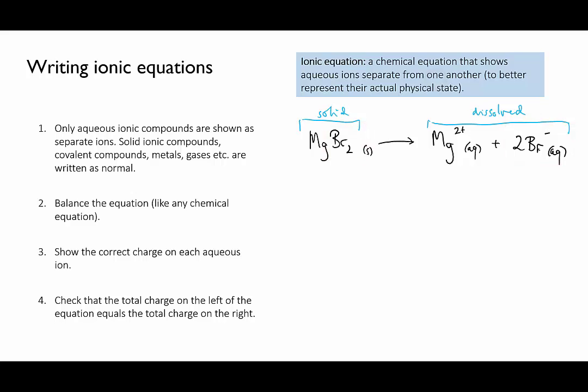Notice that the stoichiometric coefficient of the bromide ions on the right-hand side is a big two representing two separate bromide ions. On the left-hand side in the formula there's a small two that comes after the bromide because we're representing that there are that many bromides within the formula rather than separate it out.